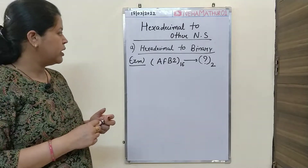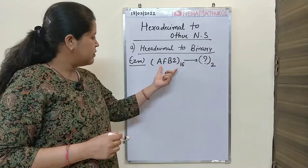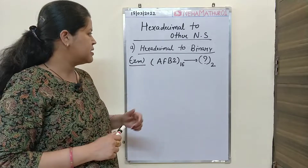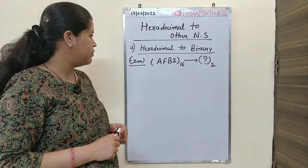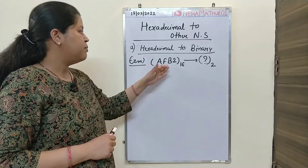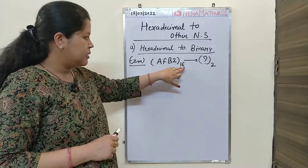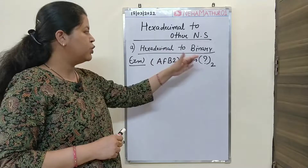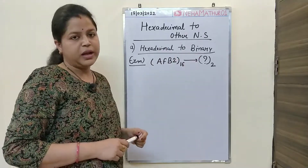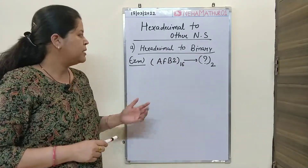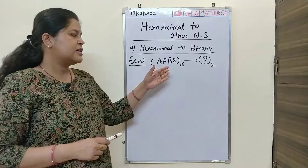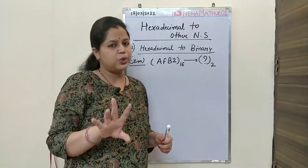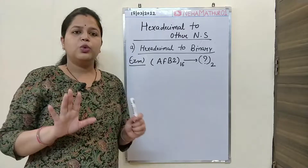By observing this number, you can see that this is definitely a hexadecimal number system because it contains A, F, B and the base itself indicates that this is hexadecimal, and you want to convert it into binary. For that we have only two basic steps.